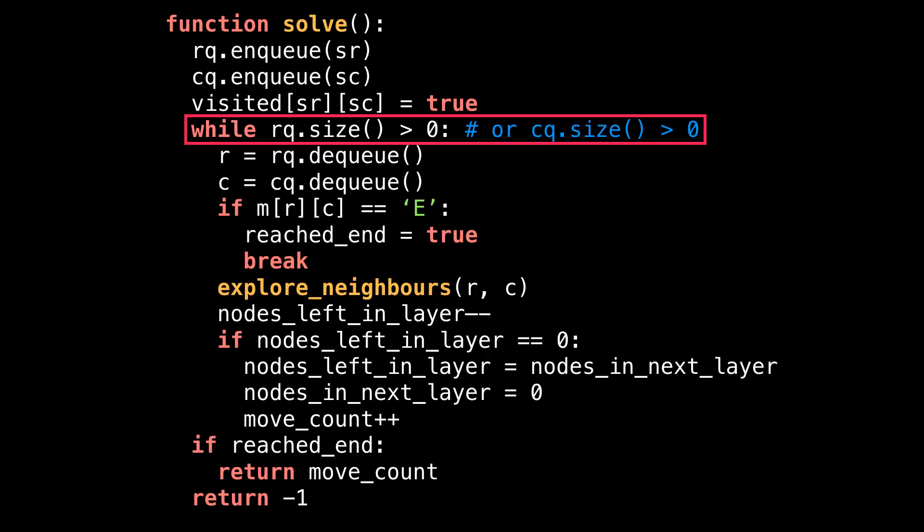We're not done our breadth-first search until both of our queues are empty. I checked that the size of the row queue is greater than zero, but you can also check that the size of the column queue is greater than zero since their sizes should always be in sync. Then since I know the queues aren't empty, I can dequeue the current position from the queues as the row position r and the column position c.